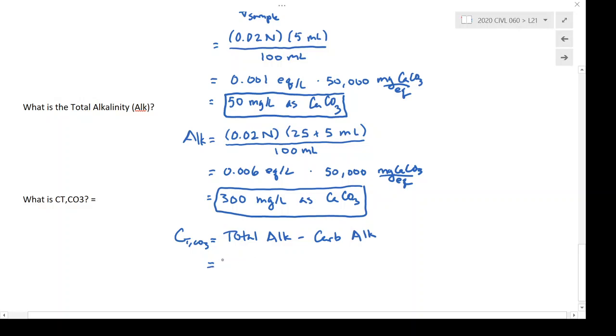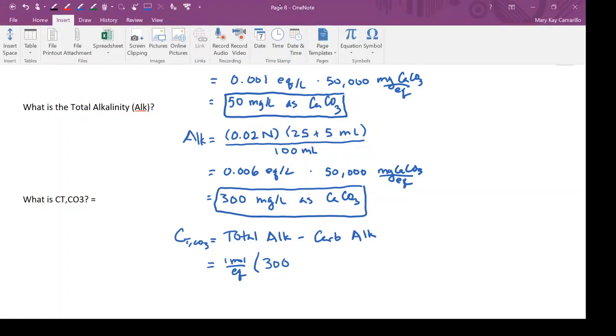And we need to make a conversion here because the units of alkalinity are equivalents per liter and the units of carbonate concentration are in moles per liter. And this is all in its alkalinity has the equivalence of one equivalent per mole, so I can put that in here, and I'm going to write this